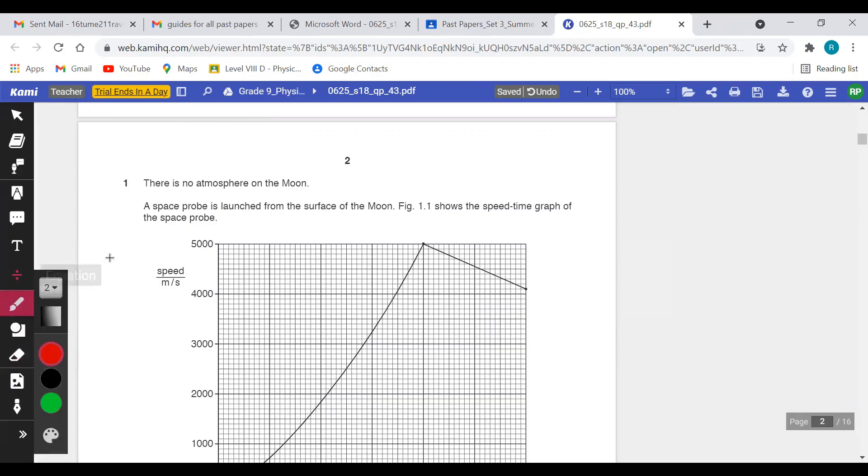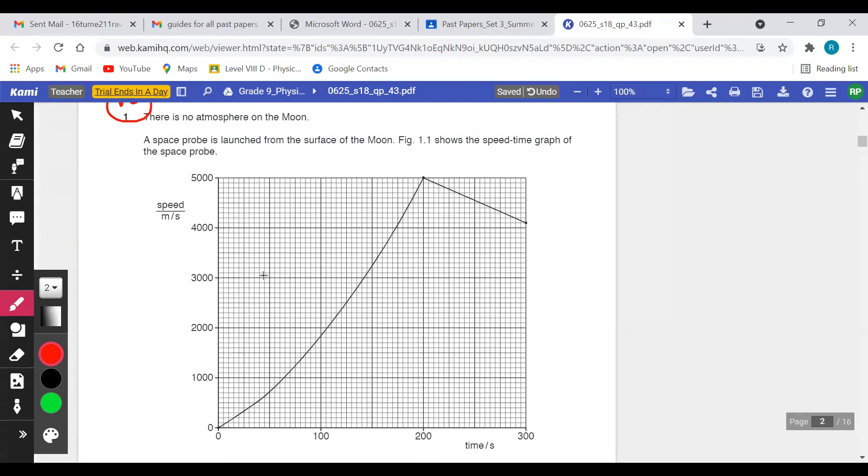Here in this question there is a space probe being launched from the Moon to Earth. During that travel its motion has been set up in a speed-time graph. We're determining its acceleration and we know that in a speed-time graph, slope is acceleration.